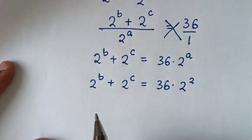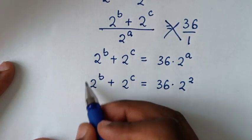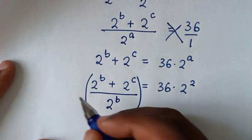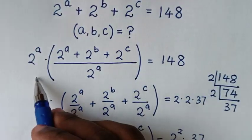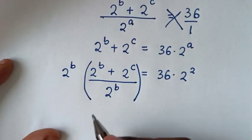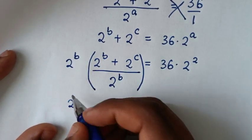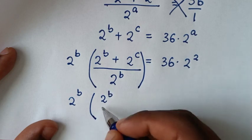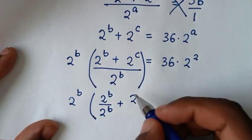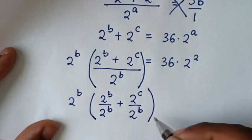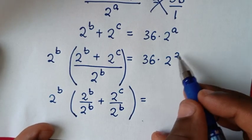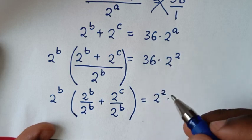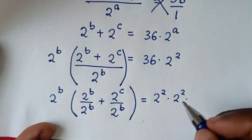Then in the next step, we will divide by 2 power b, then multiply by 2 power b — like the first step. So it will be 2 power b times: 2 power b over 2 power b, plus 2 power c over 2 power b, bracket, is equal to. From here we find the factors: 2 squared times 36, and 36 is 4 times 9, which is 2 squared times 3 squared.